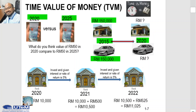Take for example the house that we purchased in 2015 — the price of the house in 2020 will increase, but in terms of the car, the price of the car in 2020 will decrease.